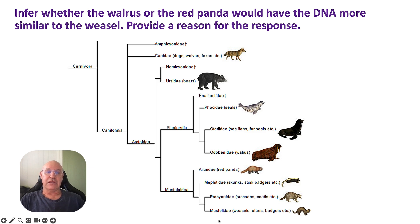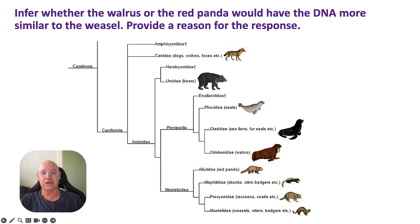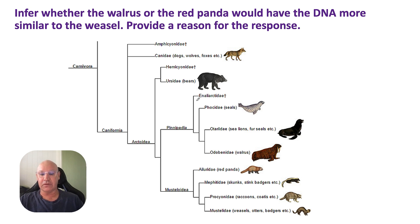Next question: infer whether the walrus or the red panda would have DNA more similar to the weasel, and provide a reason for your response. Let's find these organisms on the diagram — we've got the weasel here, the red panda here, and the walrus here.